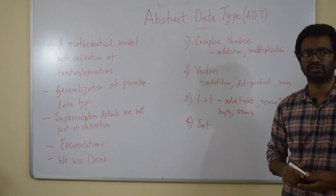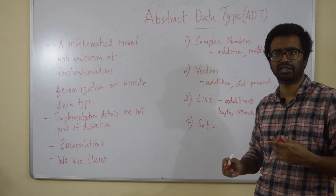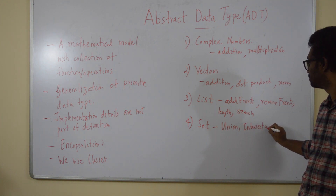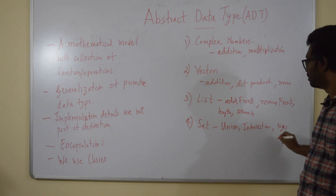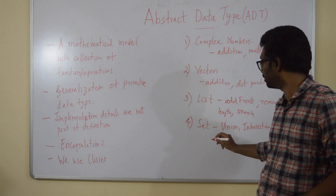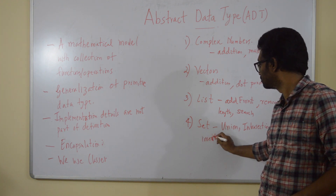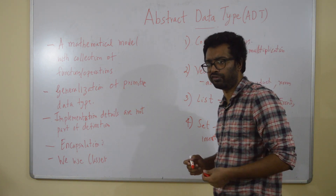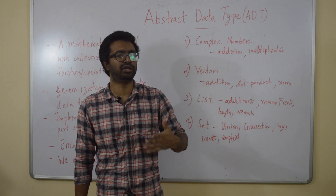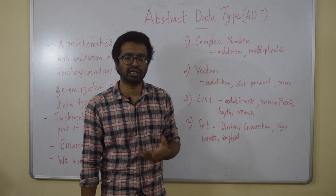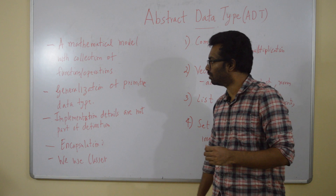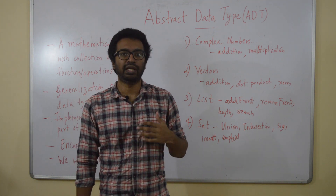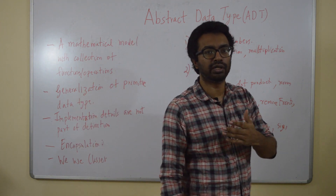What operations would you want to define on a set? One thing can be union, another can be intersection, size of the set, add or insert an element into the set, create an empty set, and we can have power set for example. So if someone asks you for a set ADT, your answer is: here is a set ADT, it supports the following functions. In the next few lectures we are going to look at implementations of a few abstract data types and how different implementations might have different advantages.